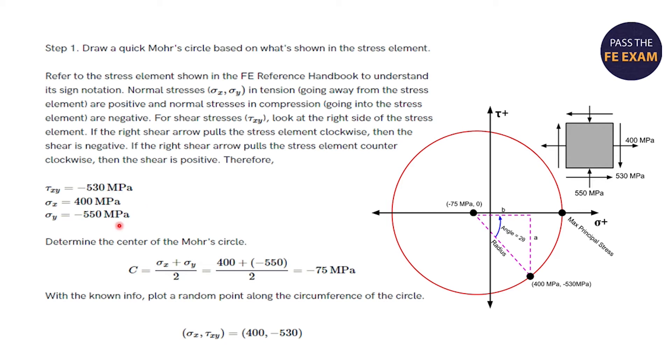The normal stresses are 400 megapascals in the x direction and negative 550 megapascals in the y direction. You can use those numbers to determine the center of Mohr's circle using this equation found in the handbook, where you will determine it to be negative 75 megapascals, which you can see here on the sketch. With the known info, you can plot a random point along the circumference of the circle, which you see here, because you now have the center of the Mohr's circle at negative 75, and you have the coordinates for the normal stresses of 400 and negative 530 giving you this point.